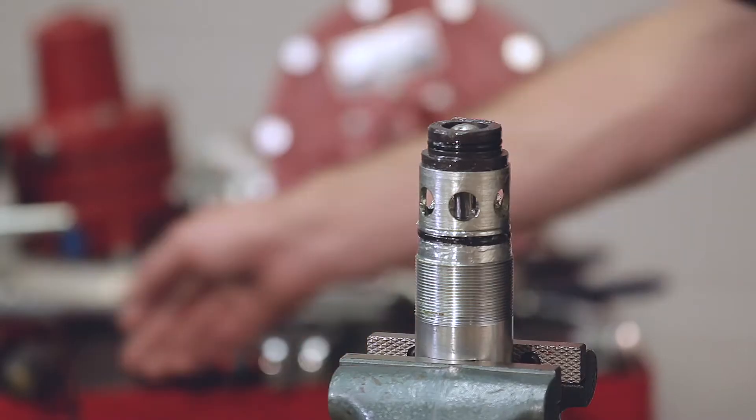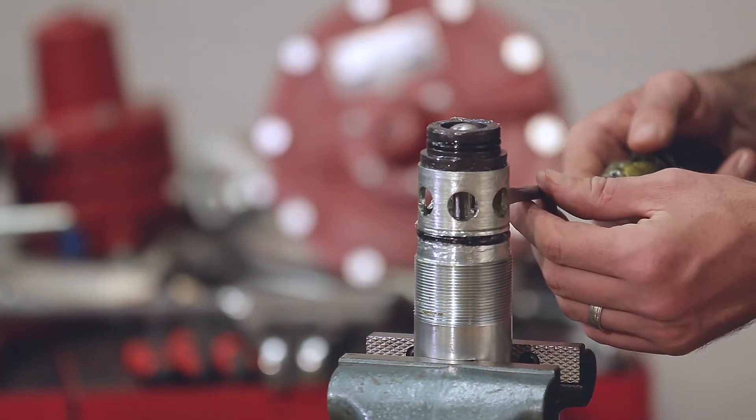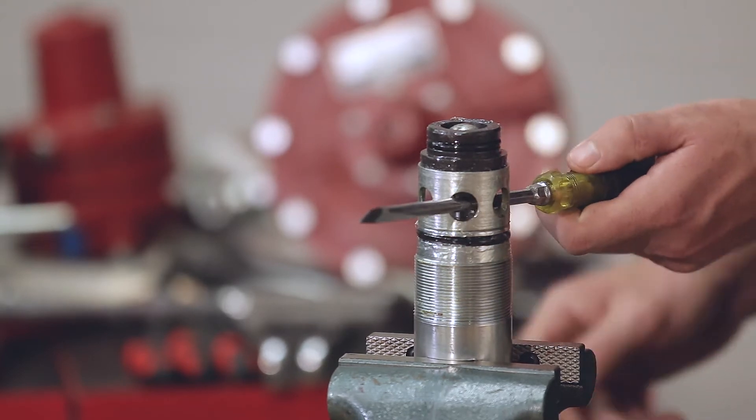Next, you'll remove the seat from the cage. You'll need to stick a screwdriver through the cage to hold it still while you loosen your seat.